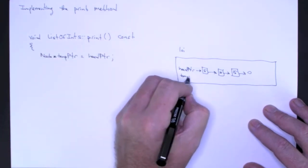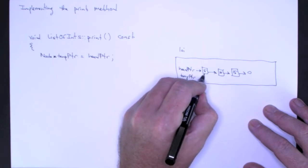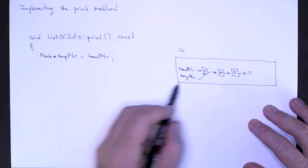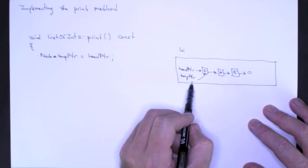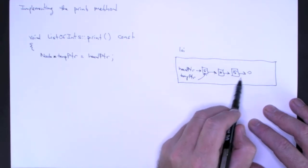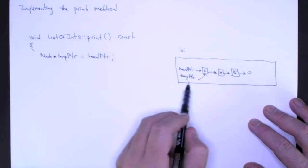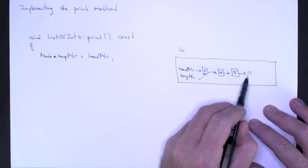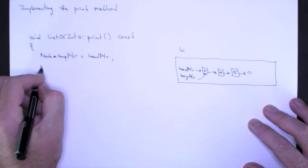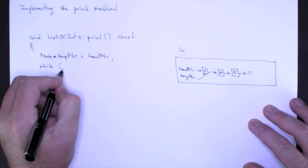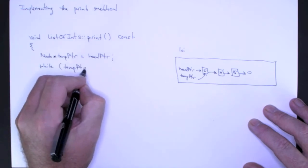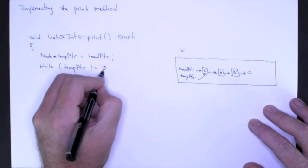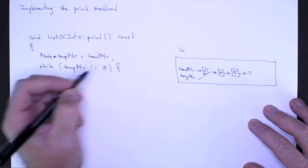So now I have temp pointer pointing to here. I am going to traverse the list as long as temp pointer points to some node. When temp pointer becomes null, that's when I stop. So as long as temp pointer does not point to null, I want to do the following.